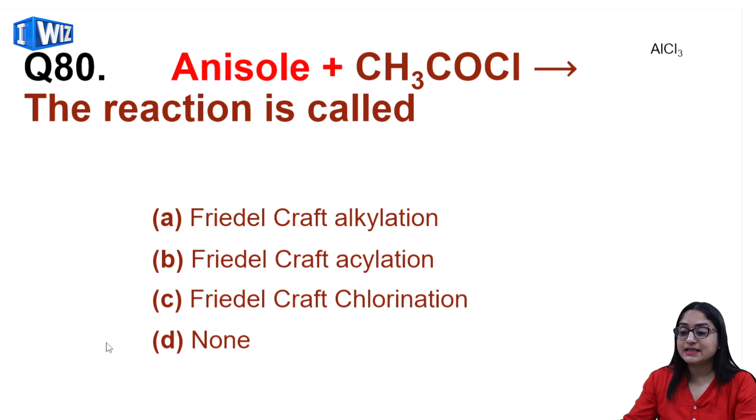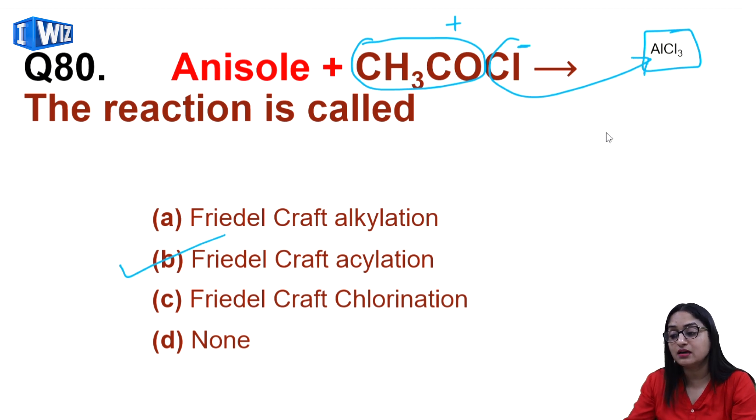Then for anisole, when you add CH3COCl, this reaction is called Friedel-Craft acylation. In this, CH3CO positive acts as electrophile. AlCl3 is an electron deficient compound, it holds this Cl negative and is also known as halogen carrier.